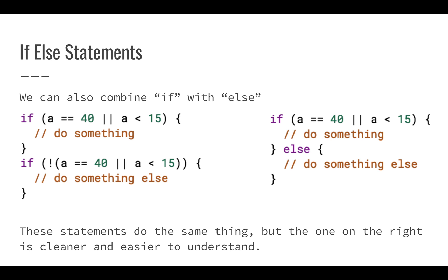We can also use if-else statements, which allow us to do an alternative. If a equals 40 or a is less than 15 we do one thing, and the else handles the opposite case. Both approaches are equivalent, but the if-else version on the right is a lot cleaner and easier to understand. Typically, if we can write less code, we want to — it just makes it easier to maintain in the long run. Usually when your code reads like you're speaking normal words, it's a little bit better.